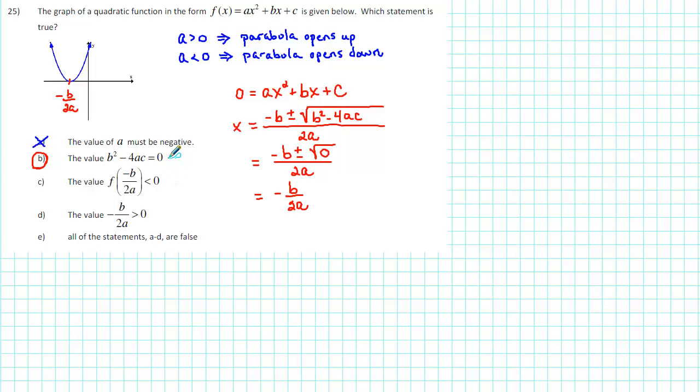We've shown that b is a true statement, but let's go ahead and show that c and d are false. For both c and d, we see the expression -b/2a. What we want to recall is that -b/2a is the x-coordinate of the vertex.